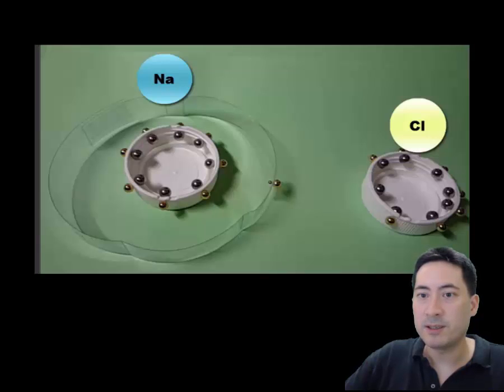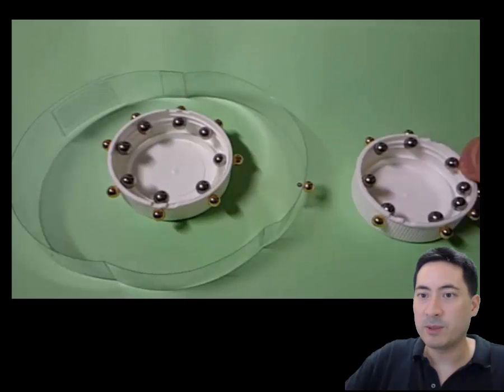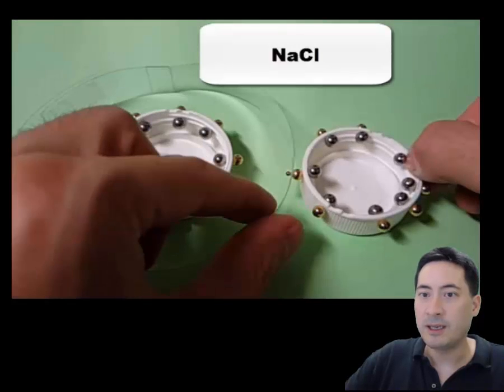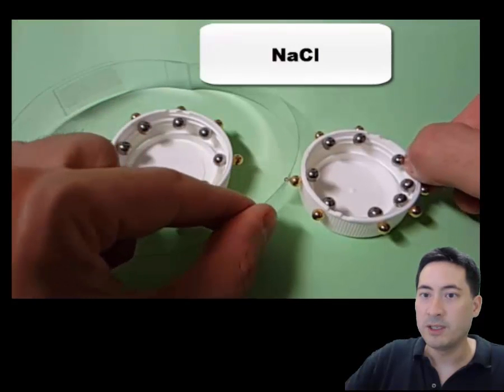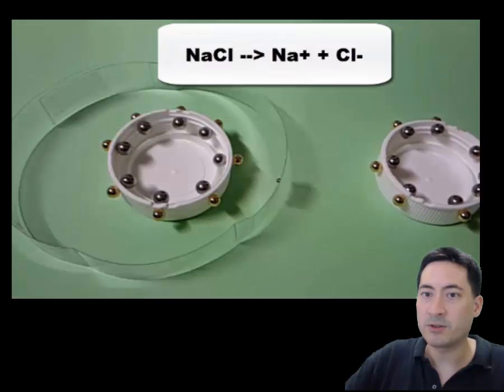So I've made the first one sodium. So it's got one electron on the outside. It's quite happy to lose that to get a full shell. And I've made the other one chlorine. So obviously what happens when the two come together, chlorine has a much stronger electronegativity ability to pull an electron to itself. And so it naturally wins. And so that's represented by the equation there.